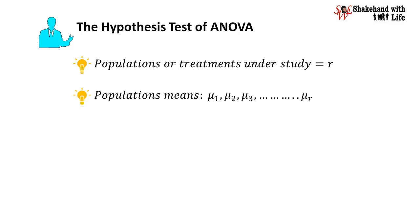Suppose we have r number of populations or treatments under study, having population means mu1, mu2, mu3, and so on muR.